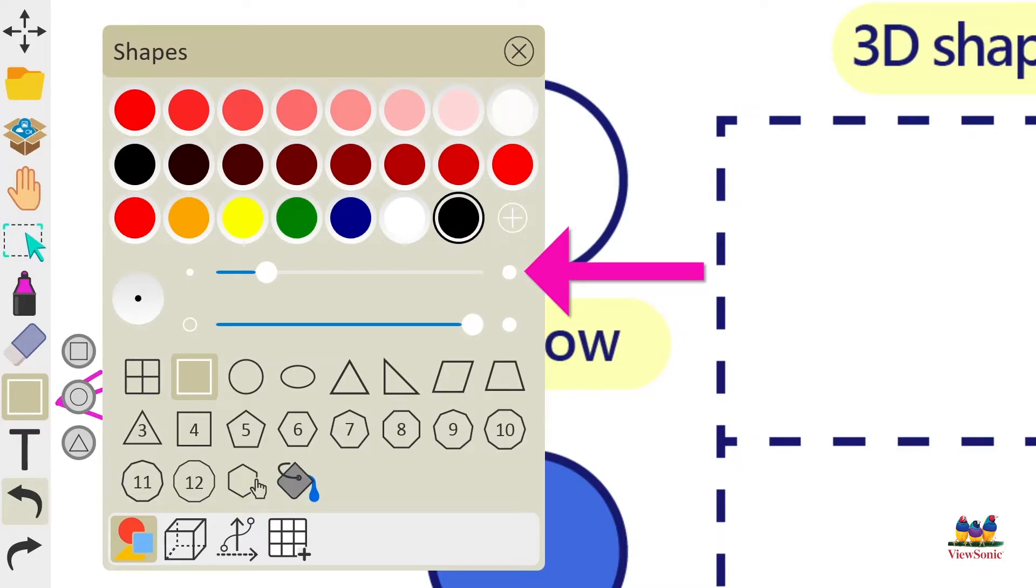The slider on the top is line thickness and the slider on the bottom is transparency. Let's choose a triangle and we'll change the color to blue to draw our first shape.